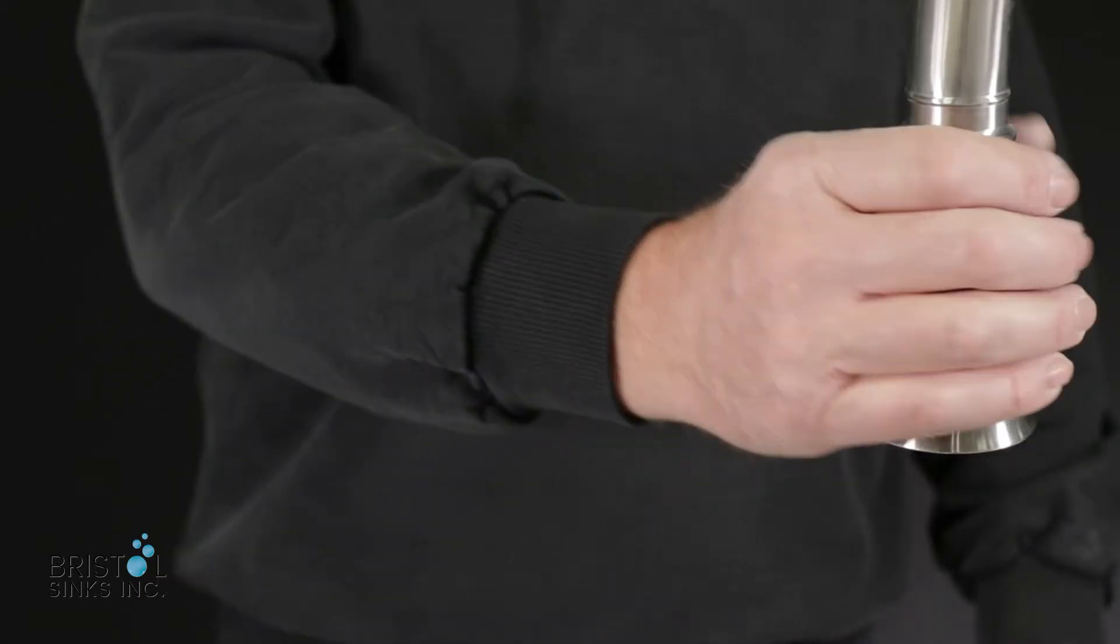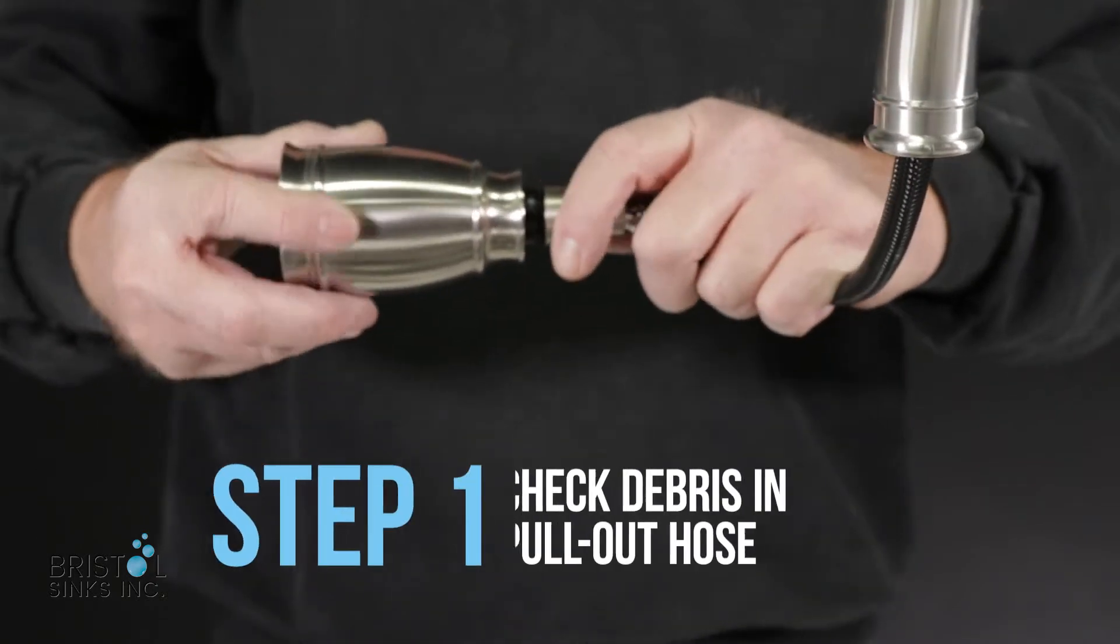To diagnose this, the first step is to take the head out of the faucet and take it off the pull-out hose.